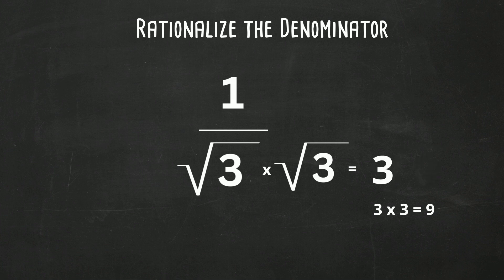So, we can multiply the denominator times the square root of 3, and if we do that, we need to do the same to the top. So we will multiply 1 times the square root of 3, and then the square root of 3 times the square root of 3.